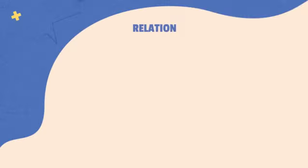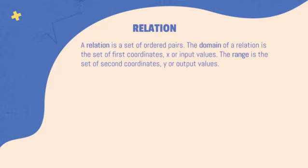Let's start by discussing what is a relation. A relation is a set of ordered pairs. The domain of a relation is the set of first coordinates, x, or input values. The range is the set of second coordinates, y, or output values.